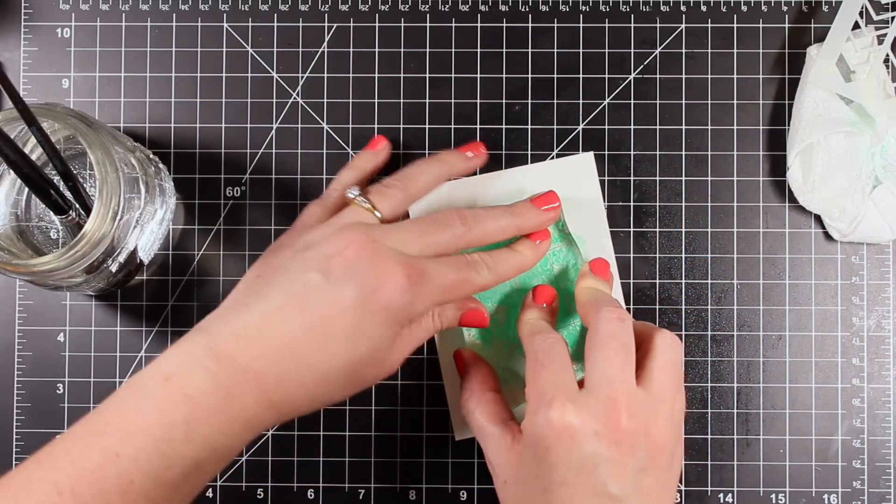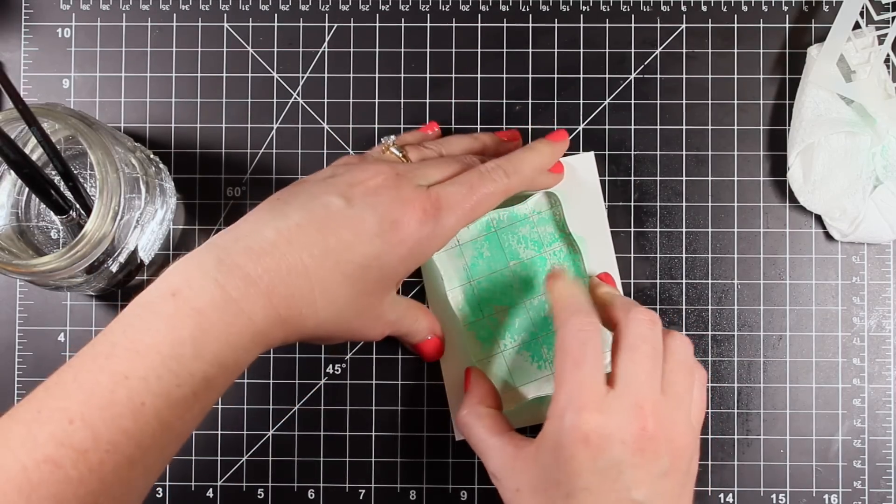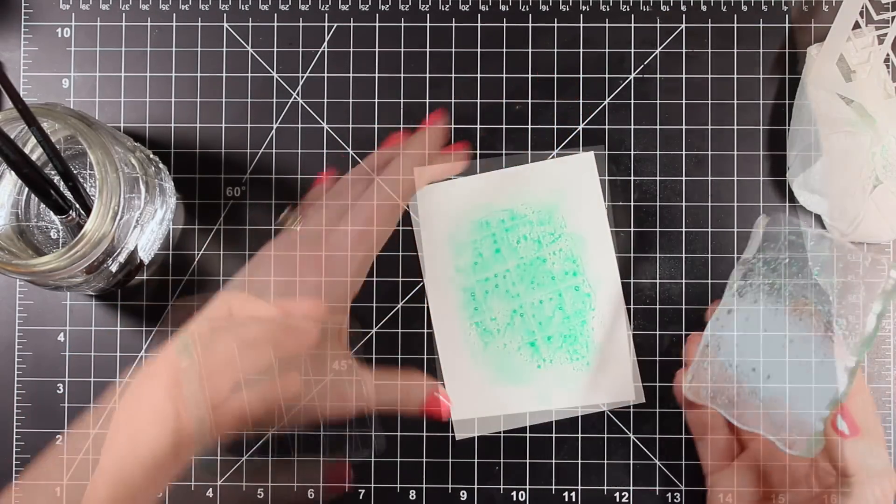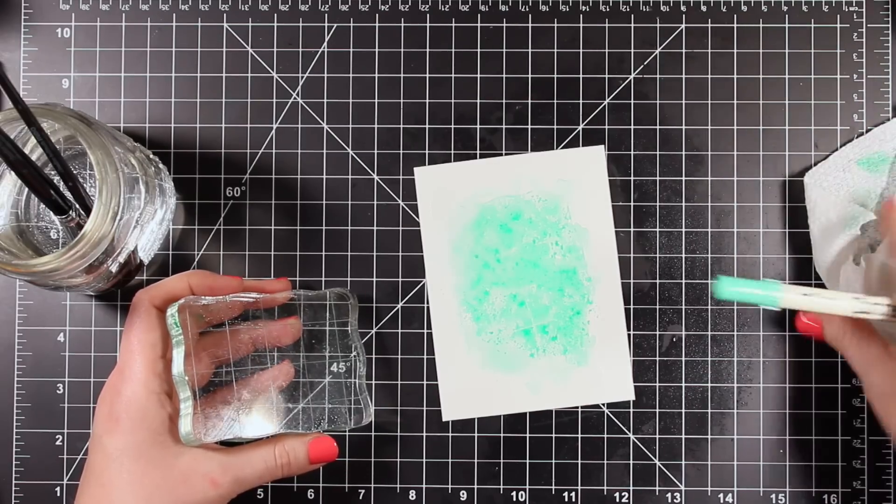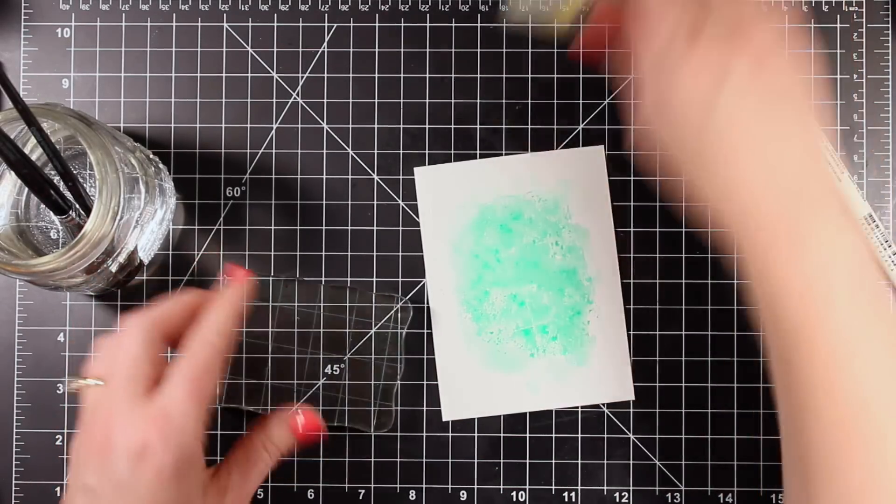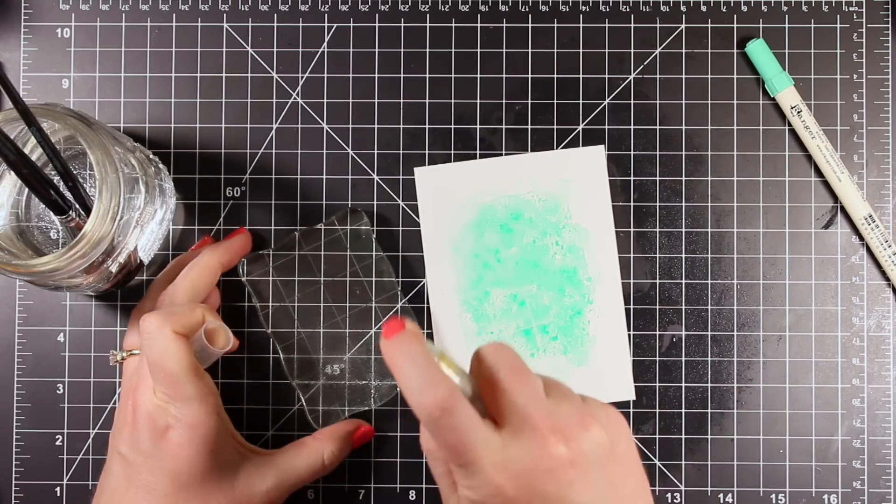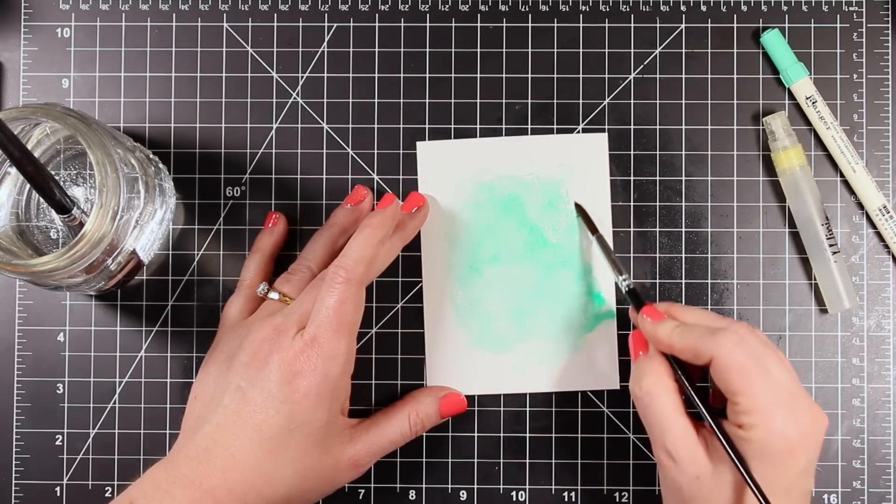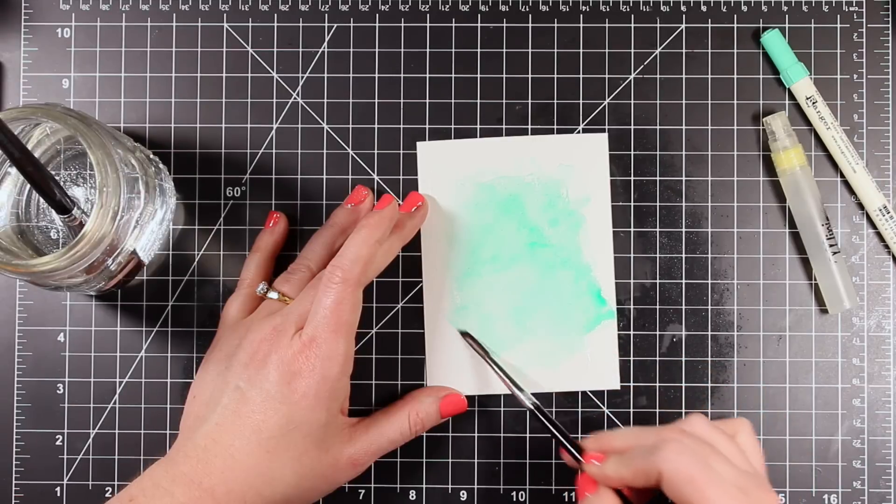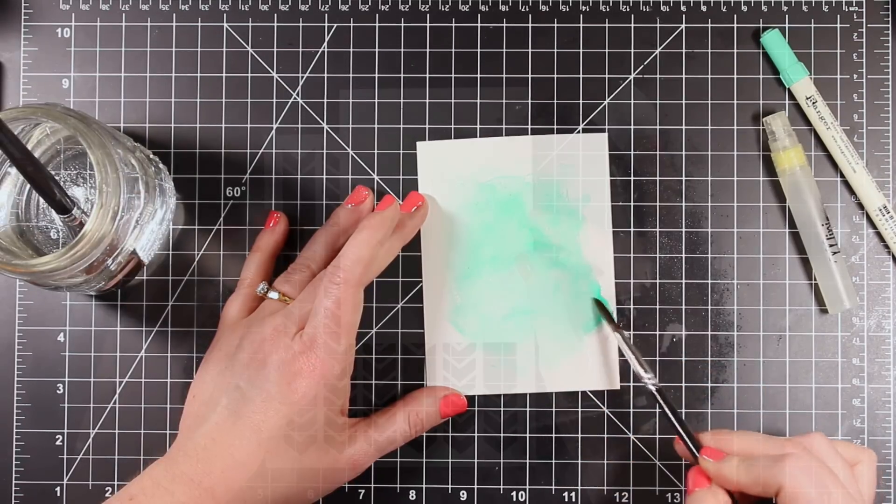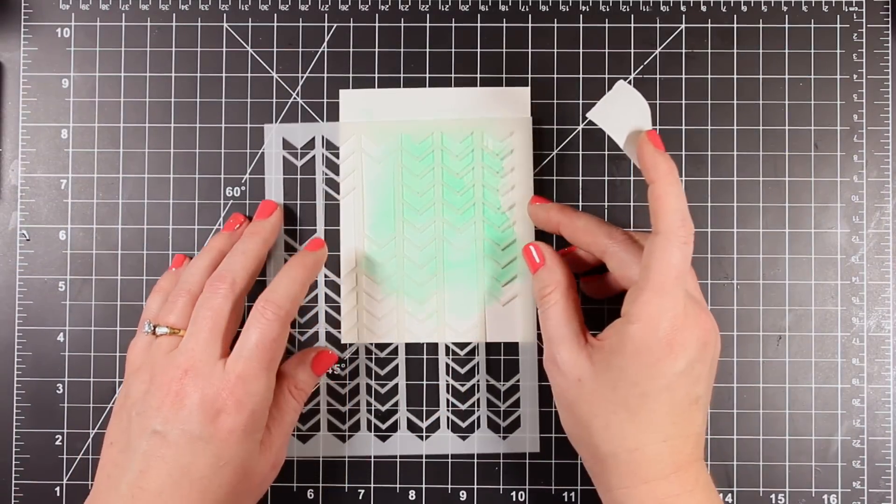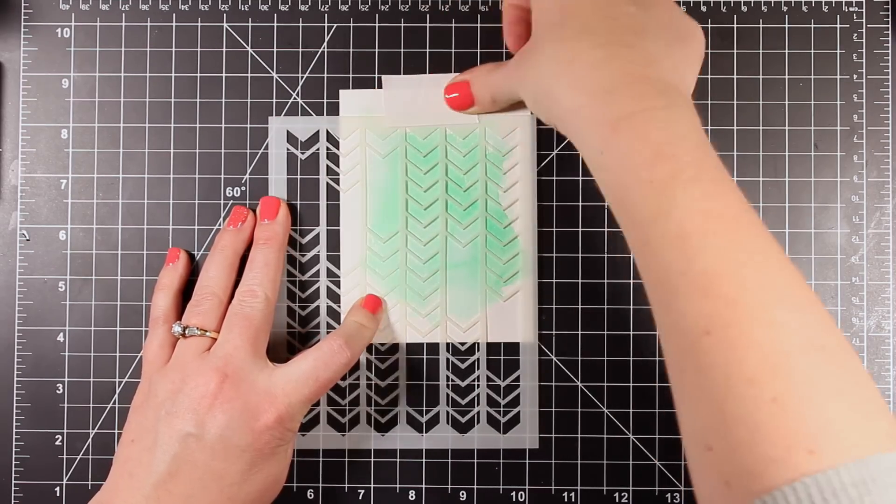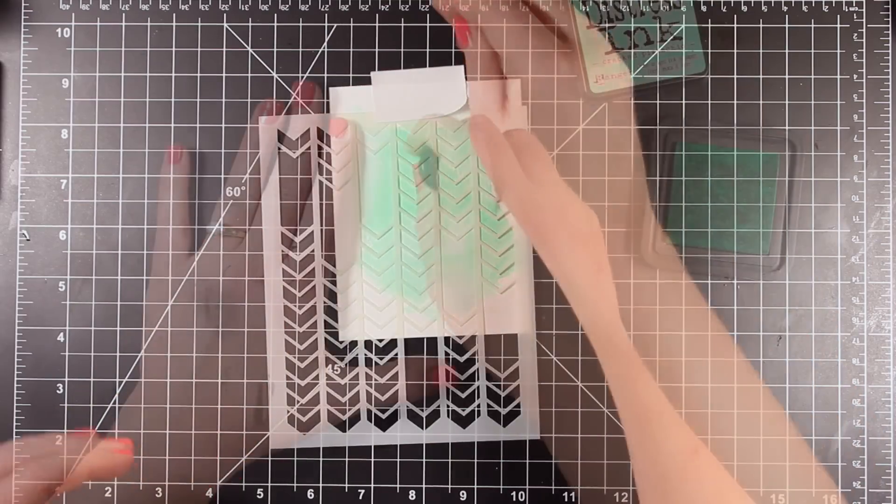I'm going to press this inked up and spritzed block onto my piece of watercolor paper. Now you can see I totally messed up because I pressed this ink onto the engraved side of my block. But that's okay. I'm going to flip it over to the smooth side and add some more water and then just move it around with my paintbrush to get rid of those grid lines. Once again, I just went ahead and heat set that. You could set it aside to dry if you don't want to heat set it.